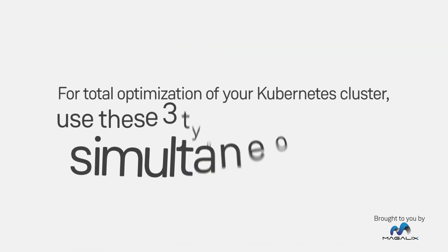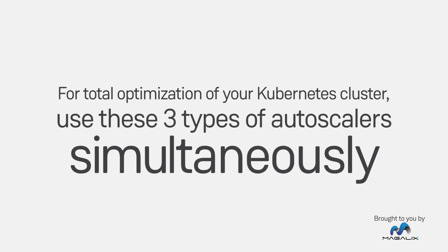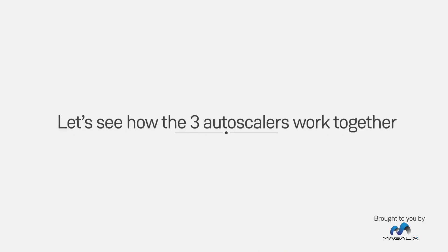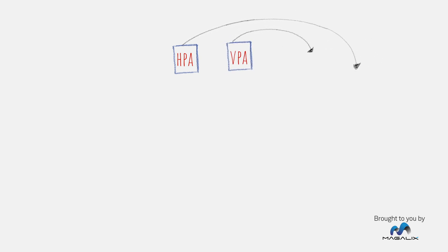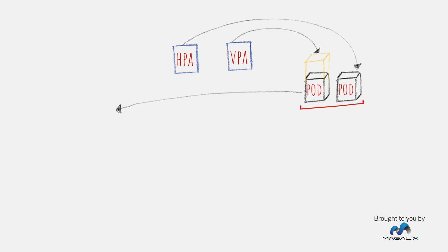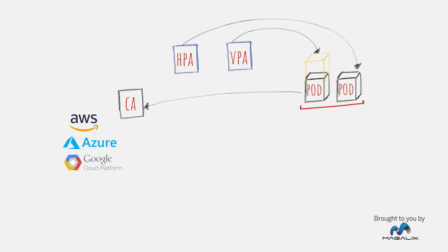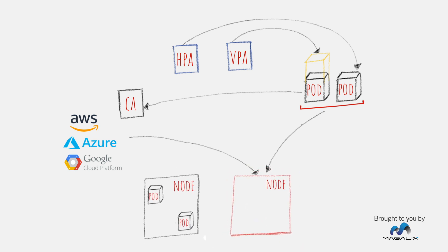For total optimization of your Kubernetes cluster, use these three types of autoscalers simultaneously. The VPA or HPA may grant containers more resources based on pre-configured criteria. When the CA detects pending pods due to lack of resources, it connects with your cloud provider to provision more nodes. Pods are automatically allocated to that additional capacity, and your cluster is back to normal again.